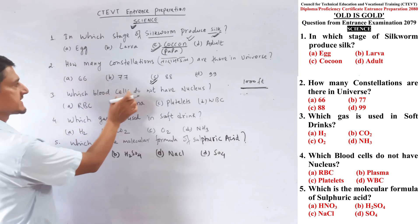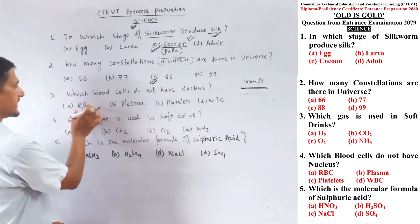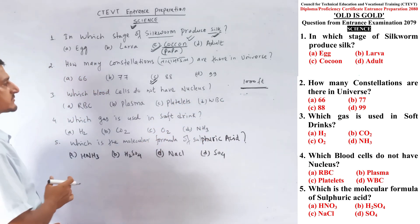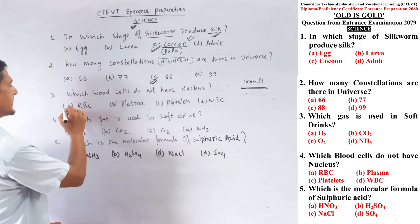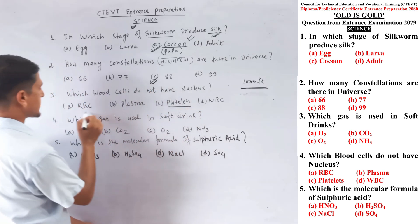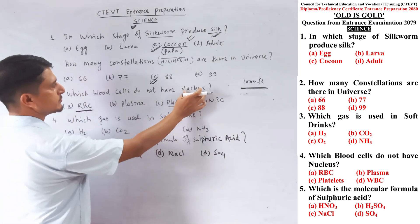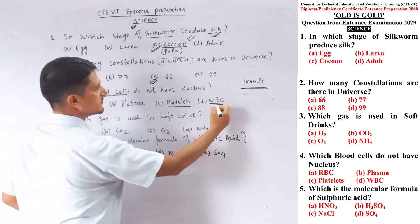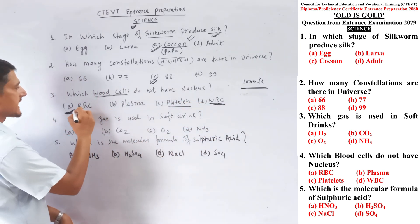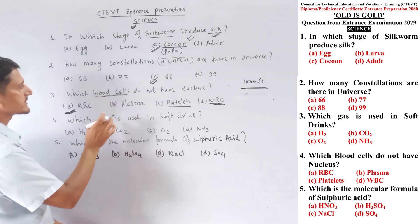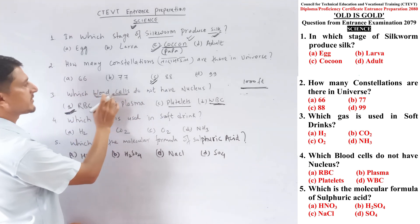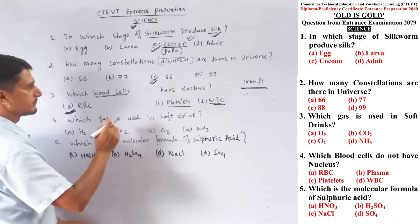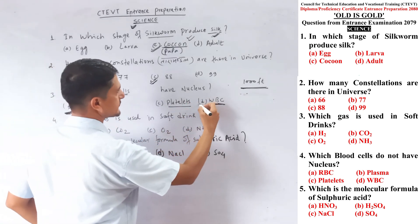Question number three: which blood cells do not have a nucleus? Options are red blood cells, plasma, platelets, and white blood cells. The correct answer is red blood cells. Mainly platelets and RBCs do not have a nucleus. For the related question — which blood cells have a nucleus — the correct answer is WBC (white blood cells).